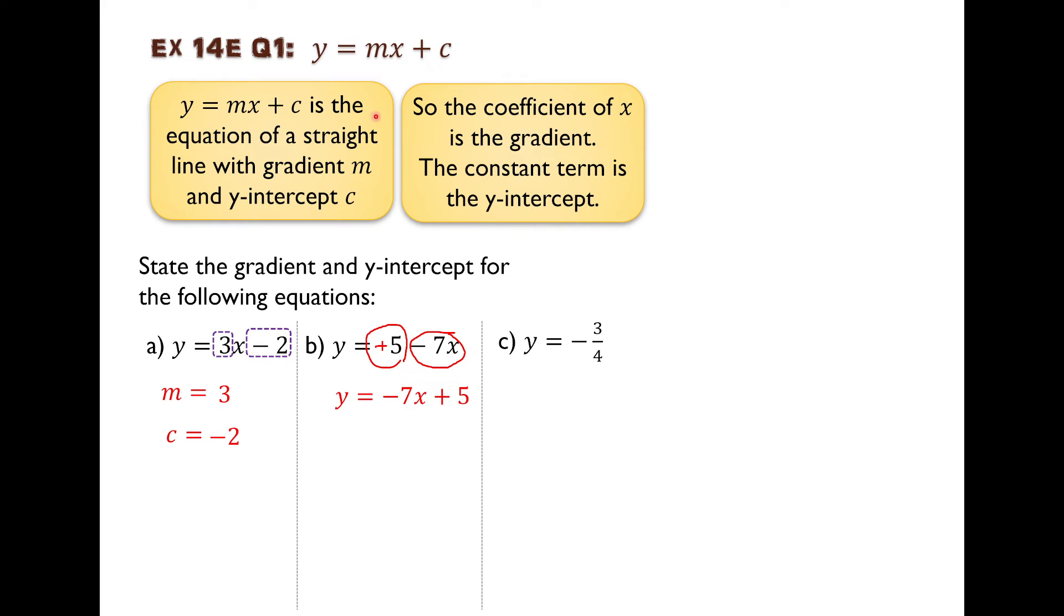The gradient, m, is the coefficient of x. x is being multiplied by, what's the coefficient of x? Negative 7.